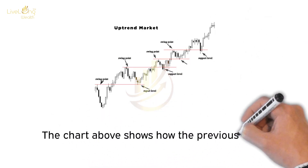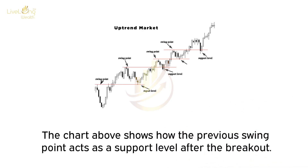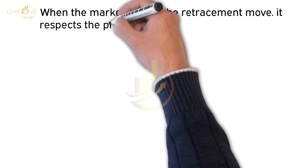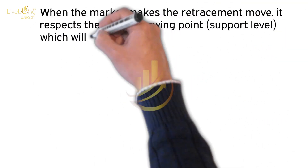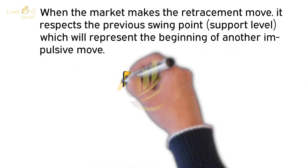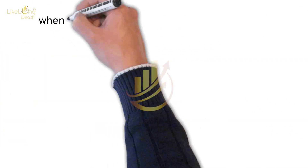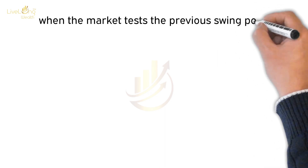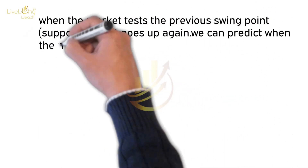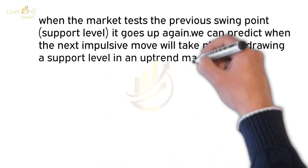The chart above shows how the previous swing point acts as a support level after the breakout. When the market makes the retracement move, it respects the previous swing point support level, which represents the beginning of another impulsive move. When the market tests the previous swing point support level and goes up again, we can predict when the next impulsive move will take place by drawing a support level in an uptrend market.